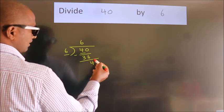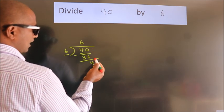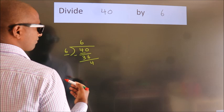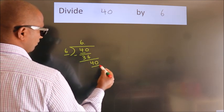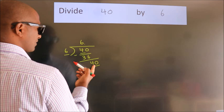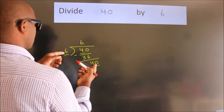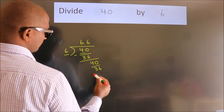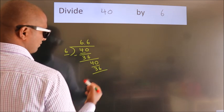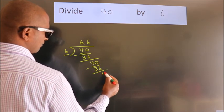After this, no more numbers to bring down. So what we do is we put a dot and take 0. So 40. A number close to 40 in the 6 table is 6 times 6 equals 36. Now we subtract. We get 4.